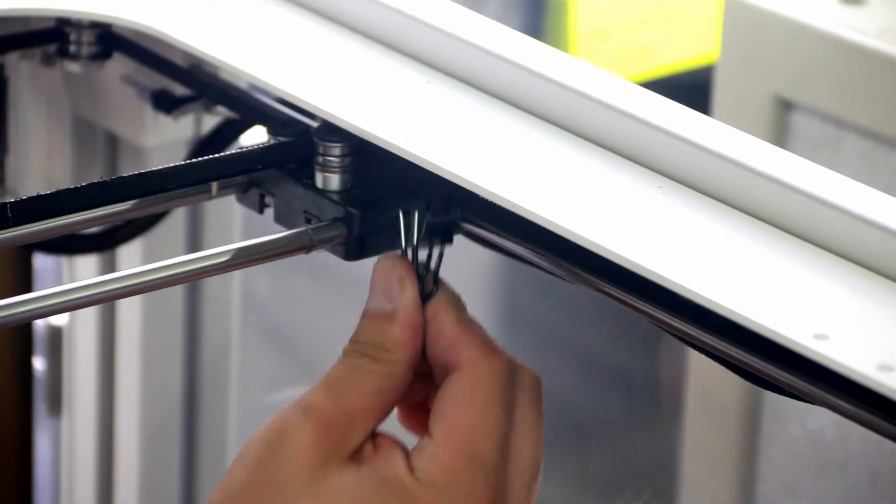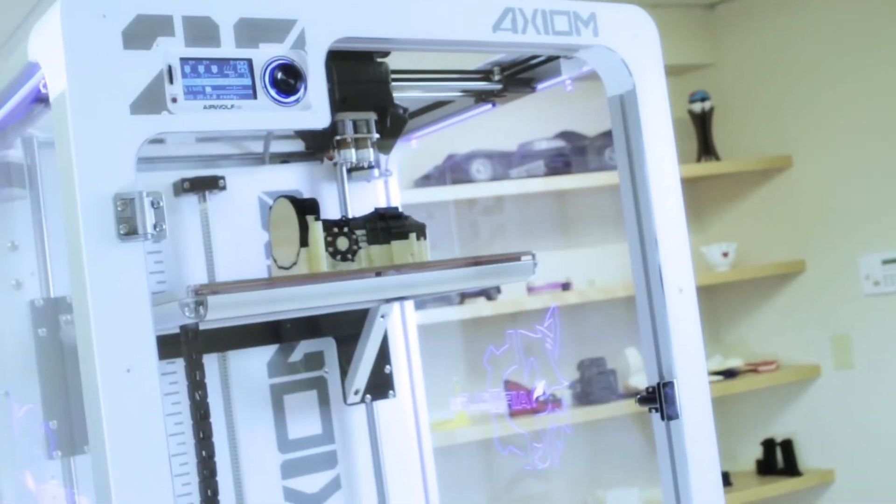Remove the clamps from the belts. Now you have successfully replaced your belt tensioner and you are all set and ready to print.